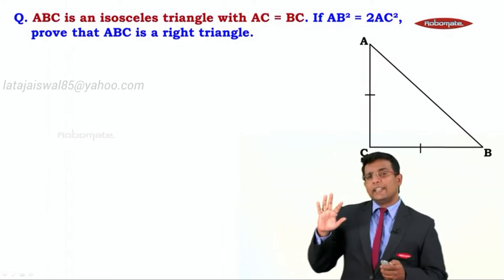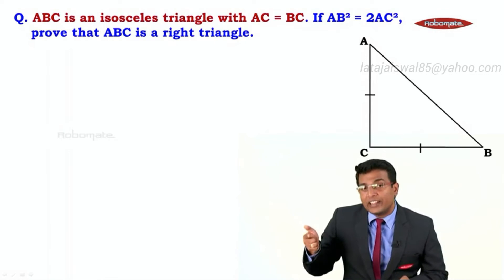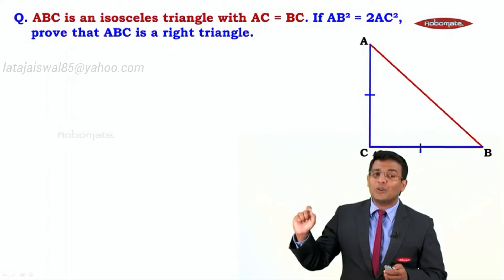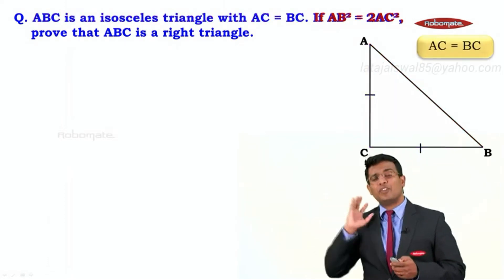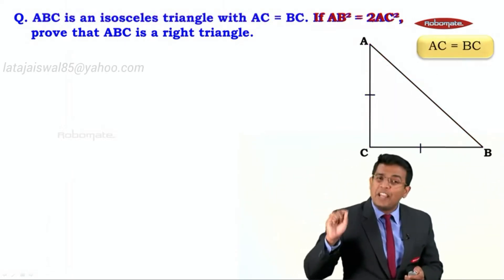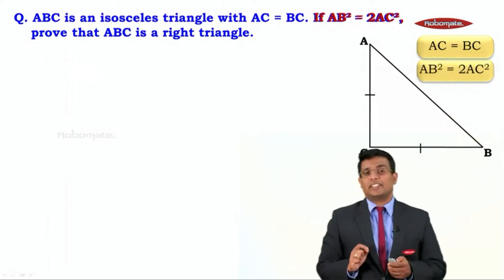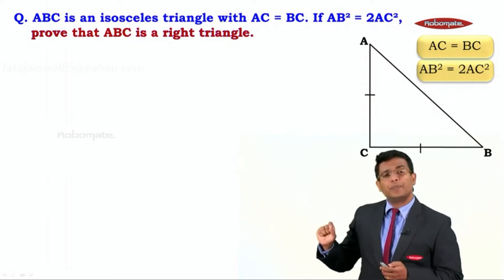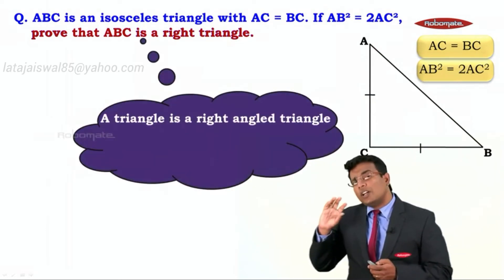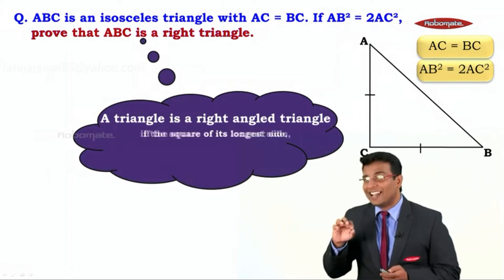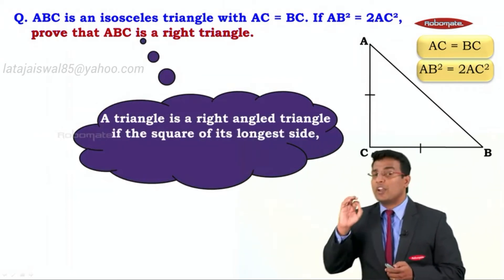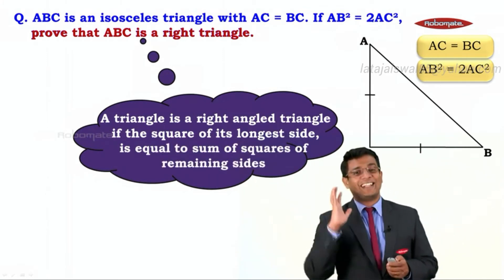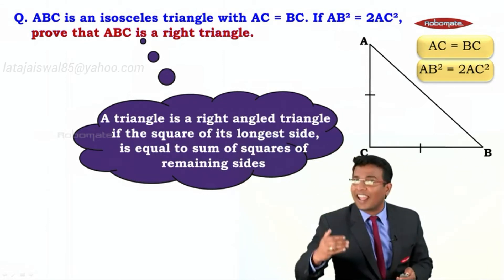Let us analyze the given information. Triangle ABC is an isosceles triangle with AC equal to BC — that is the first piece of information. The second is that AB square is equal to twice of AC square. Now, when does a triangle become a right triangle? If the square of the longest side is equal to the sum of the squares of the remaining two sides, then we can say the triangle is a right triangle.